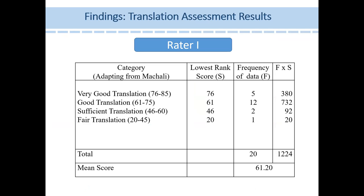The findings are returned in the translation assessment results. The quality of the translation is judged according to the translation categories: very good translations, good translation, sufficient translation, and bad translation. The results of the analysis are quantified by giving numbers based on the translation criteria. From the first assessment, the mean score of the translation is 61.20.